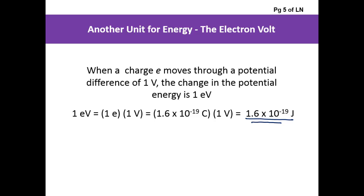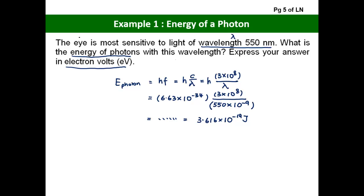So once we have that, we can move back to our original question, and we can now convert this into electron volts. We have 3.616 times 10 to the power of minus 19 joules, and we can divide it by 1.6 times 10 to the power of minus 19 to convert it into electron volts. You put it through your calculator, and you get 2.26 electron volts. And that is the answer.